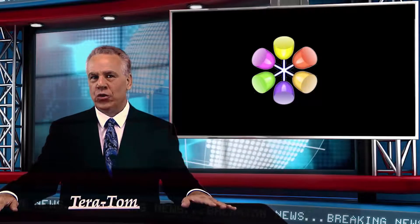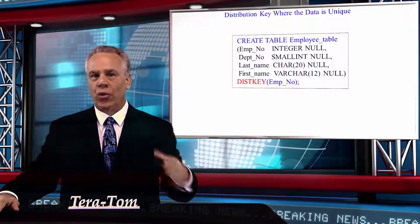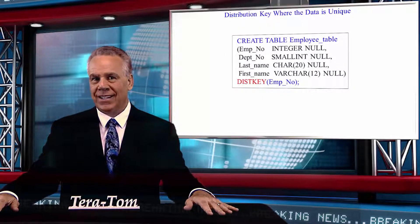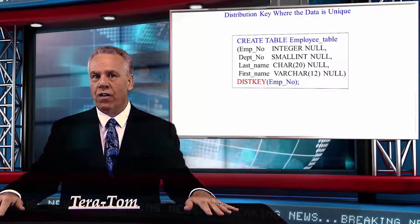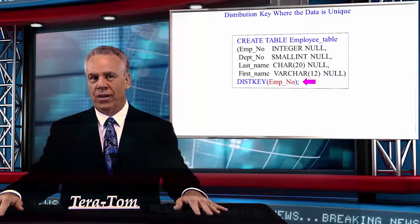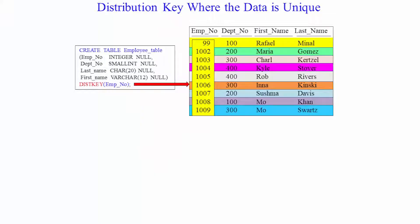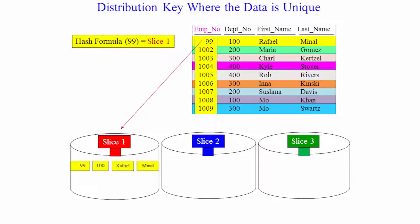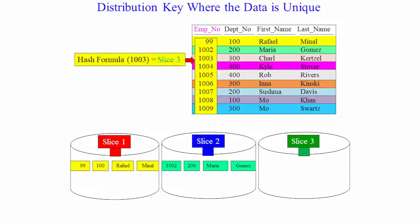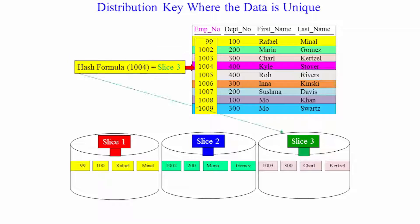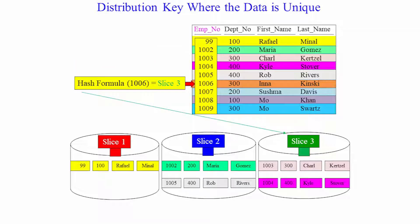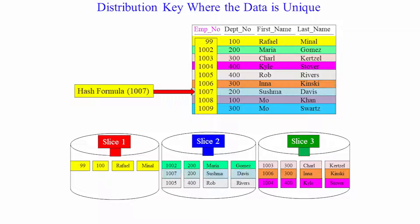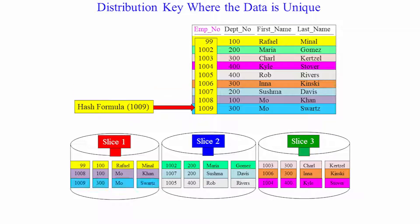It's so important that you can visualize the data on these systems. We're going to take a look at an employee table, and it's going to have a distribution key of EMPNO. Because it does a math formula on that employee number with each row, they're going to put those out fairly evenly across all the slices, since employee number is a unique key with no duplicate employee numbers. So based on the formula, it will spread the data fairly evenly.